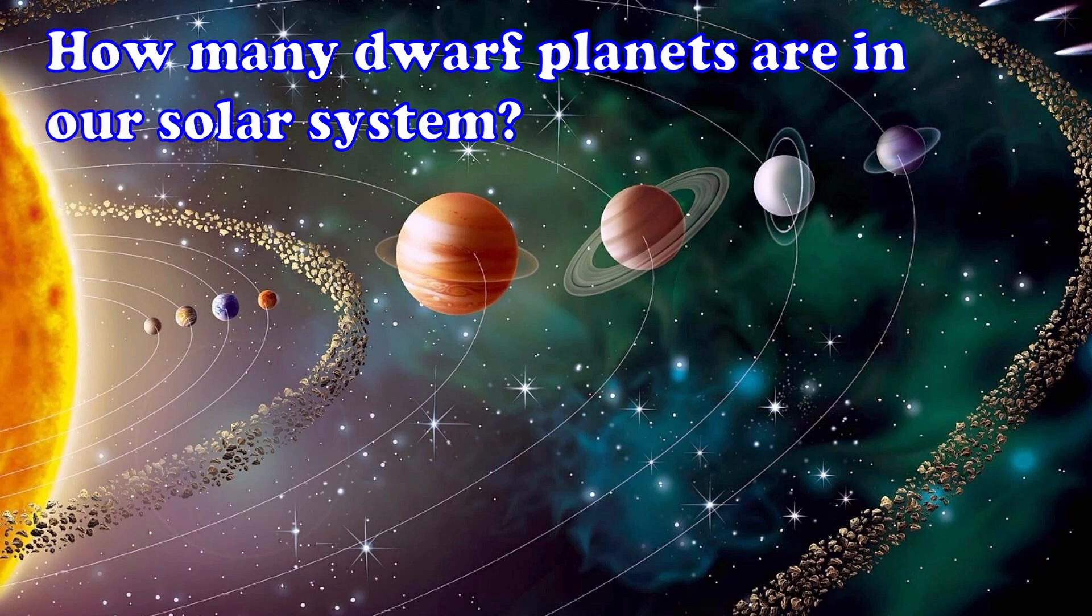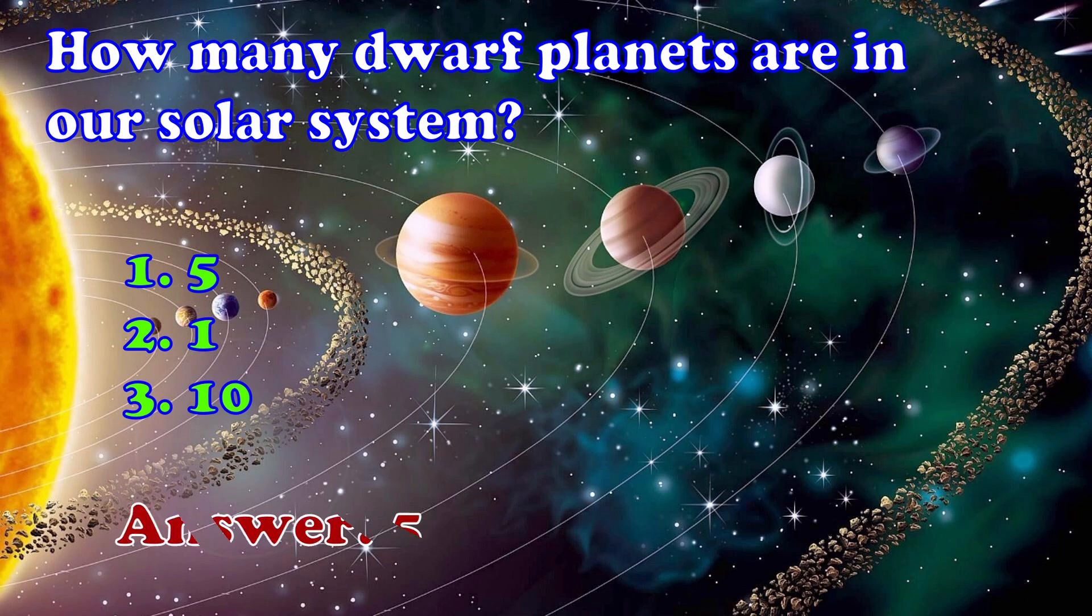How many dwarf planets are in our solar system? 1, 5, 2, 1, 3, 10? The answer is 5.